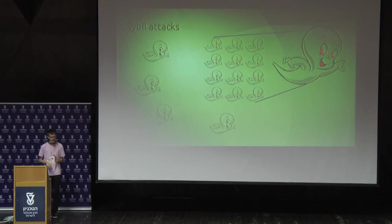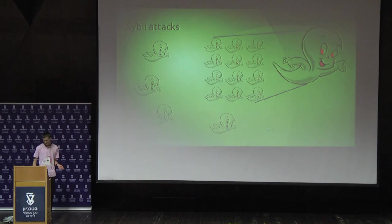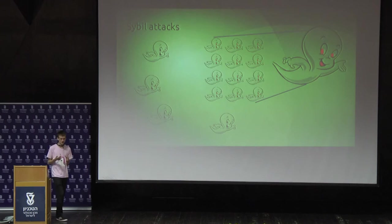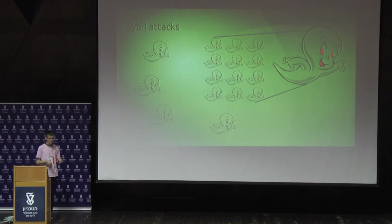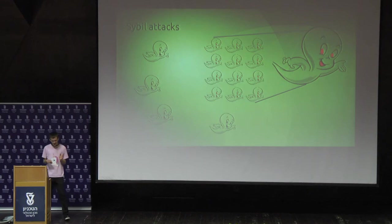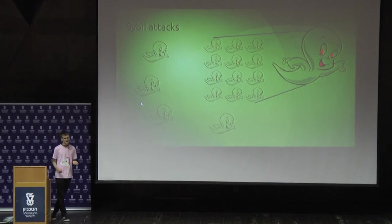A Sybil attack is fairly simple. You have some number of participants, and then a bad guy comes in who wants to take over the voting process — reverse transactions, do all sorts of nasty stuff. What the bad guy does is spin up a huge number of virtual machines on his computer, connecting to the network separately with each one, pretending each virtual machine is an independent computer. Even though the attacker is one person, he has 12 fake identities while the good guys have four, so it looks like the attacker has 75% of the entire system — all with just one computer.